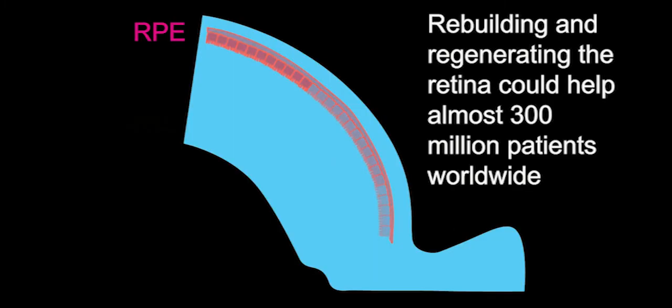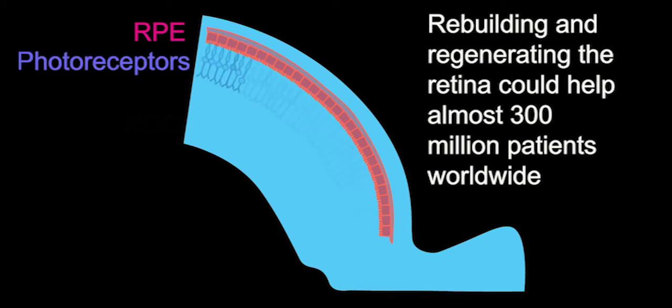A significantly greater challenge is to transplant other retinal cells. After overcoming many hurdles in manufacturing, photoreceptors can now be produced at high purity and have been transplanted into the subretinal space in animal models.